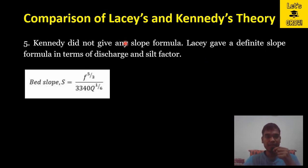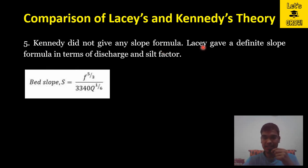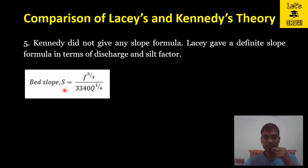Point five: Kennedy did not give any slope formula — the bed slope must be known initially before design. But Lacey gives a definite slope formula in terms of discharge and silt factor: S = f^(5/3) / (3340 × q^(1/6)).